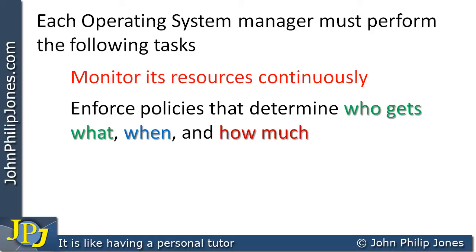Let's use the process manager to discuss enforcement of policies. Say we have process A running on the CPU, with its machine code being fetched, decoded, and executed, and two more processes — B and C — are waiting. Which one gets processor time next? Who gets what? When will process A stop executing? And when B and C are given access to CPU time, how much time will they actually be given to run on the central processing unit?